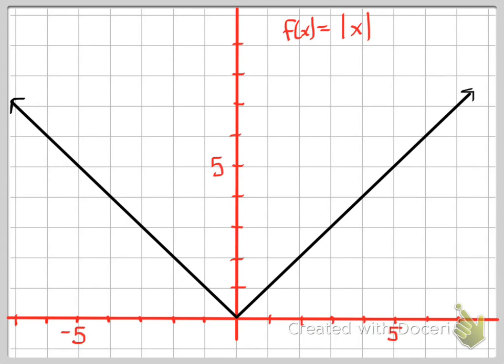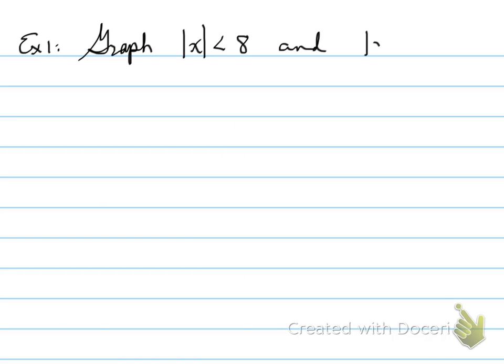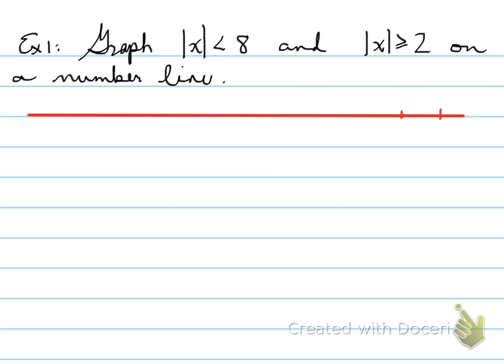Next, seeing the graph, and there it is. Let's go on to the next part. Example one: graph the absolute of x is less than eight, and the absolute of x is greater than or equal to two on a number line. So you're going to graph them on two separate number lines. The first one, absolute of x is less than eight. There's some rules about graphing on a number line. There must be at least seven ticks, and you have to use a proper scale. We have the numbers, here we go.